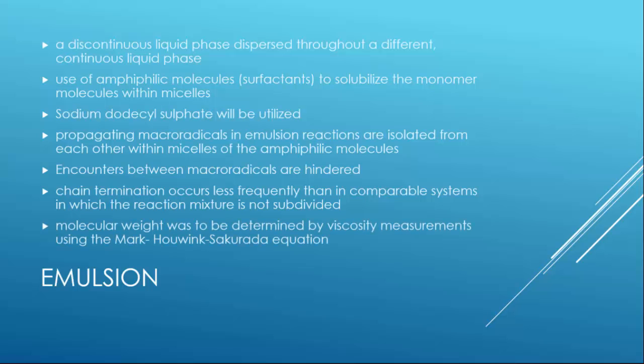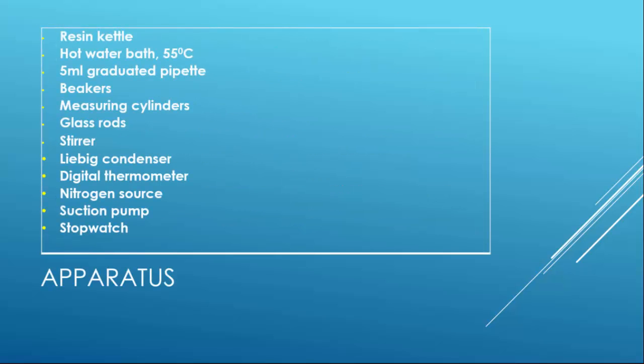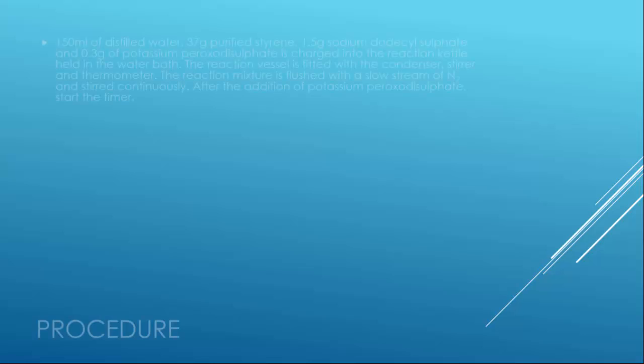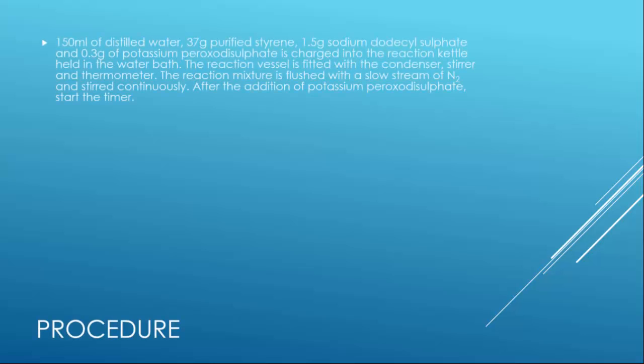Now for procedures. First, you have to add 150 ml of distilled water, 37 g of purified styrene, 1.5 g of sodium dodecyl sulfate, and 0.3 g of peroxodisulfate into the reaction kettle held in a water bath. The reaction vessel will be fitted with the condenser, stirrer, and thermometer because you are supposed to monitor the temperature of the reaction. The reaction mixture will be flushed with a slow stream of nitrogen and stirred continuously. After you add the potassium peroxodisulfate, you start the timer.